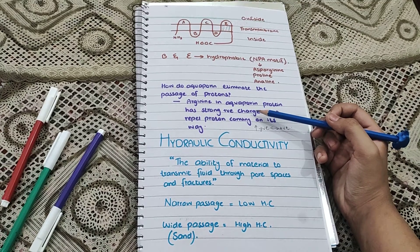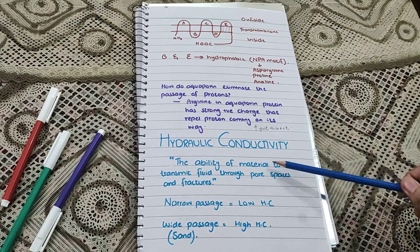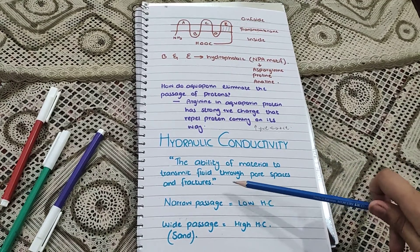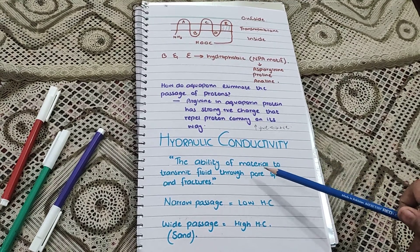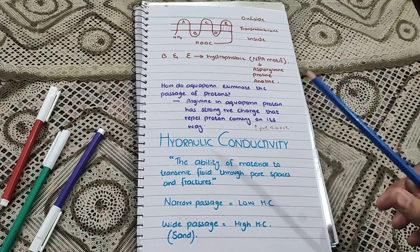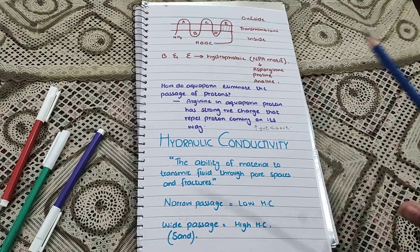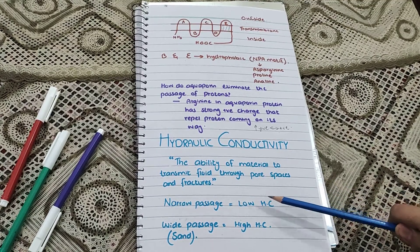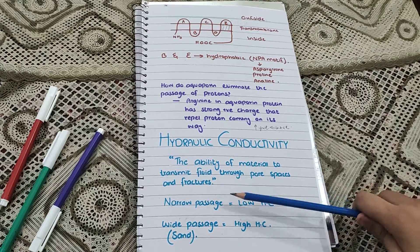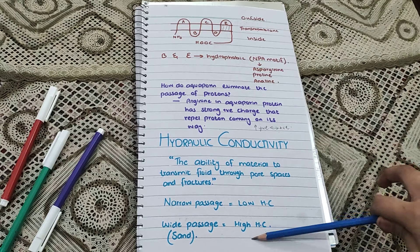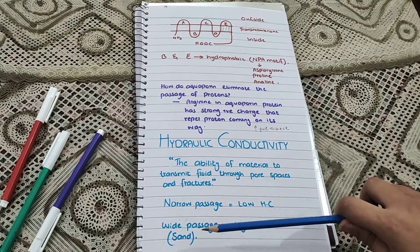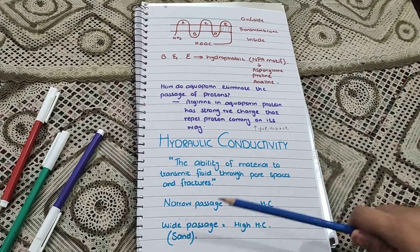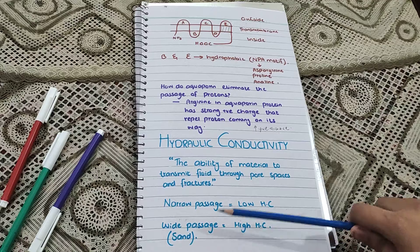Hydraulic conductivity is the ability of materials to transmit fluid through pore spaces and fractures — how easily a fluid can pass through any medium. The narrower the passage, the lower the hydraulic conductivity; the wider the passage, the higher the hydraulic conductivity. For example, the hydraulic conductivity of sand is much higher than mud or silt because sand has large pores and water passes through it very efficiently.